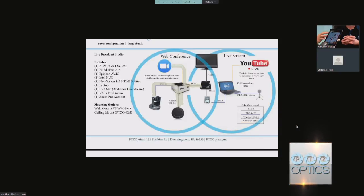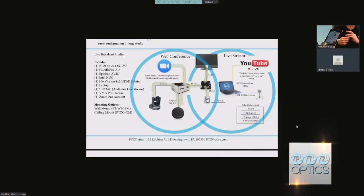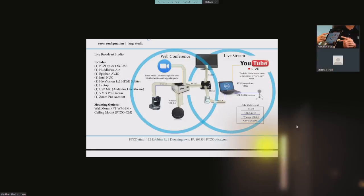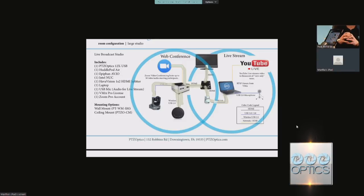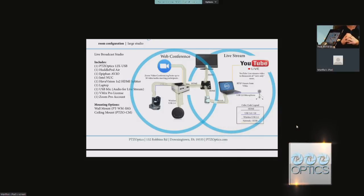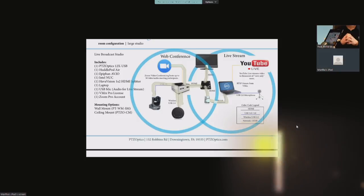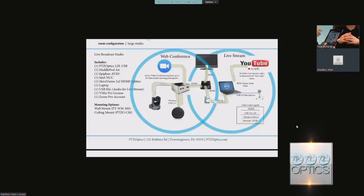We're taking the HDMI from that Intel NUC and splitting it — one goes to the display we're monitoring, and one to our epiphan AV.io, which takes the entire video conference and makes it a video input to our vMix solution. It could be Wirecast, vMix, or YouTube Live — any software-based live streaming system can now use that entire video conference as part of the live stream. That's how we add video overlays, titles, lower thirds, and then stream out to YouTube Live.